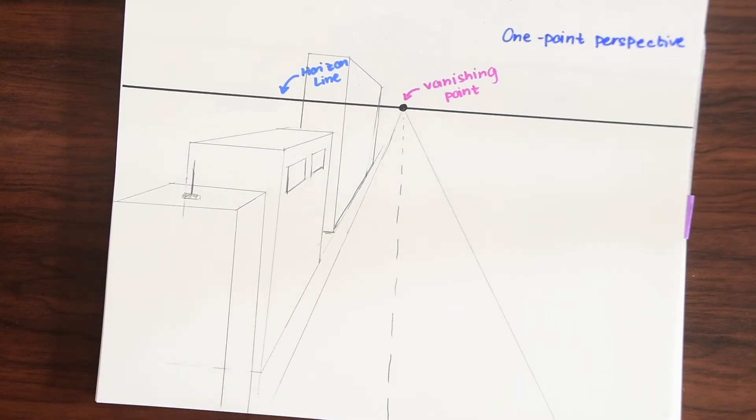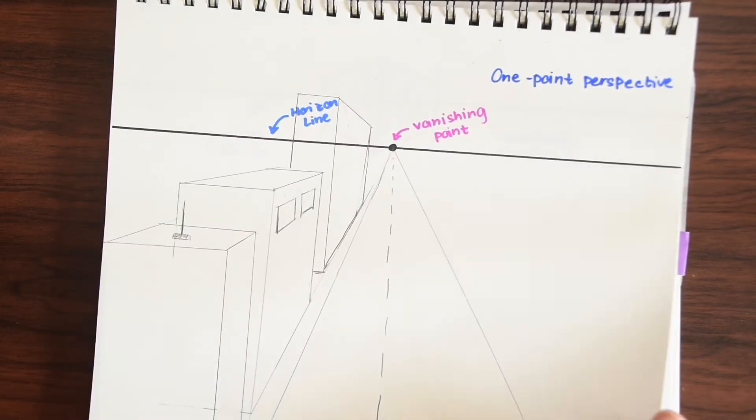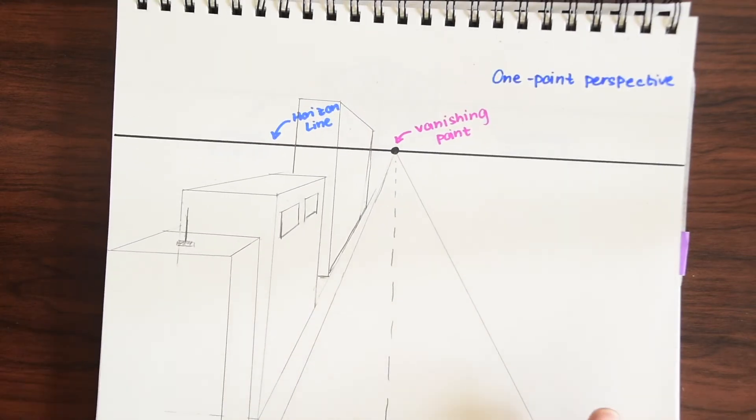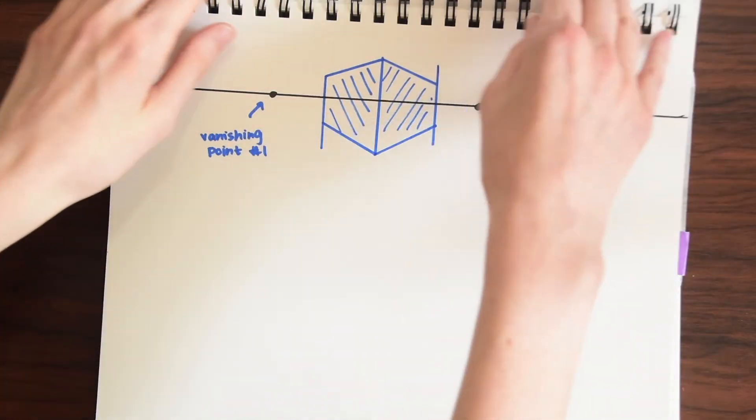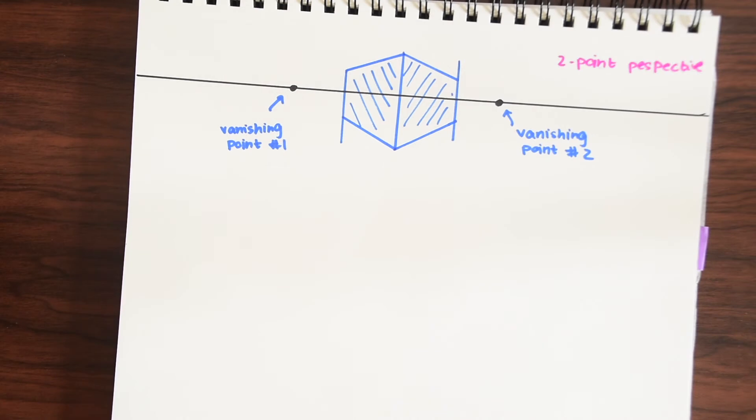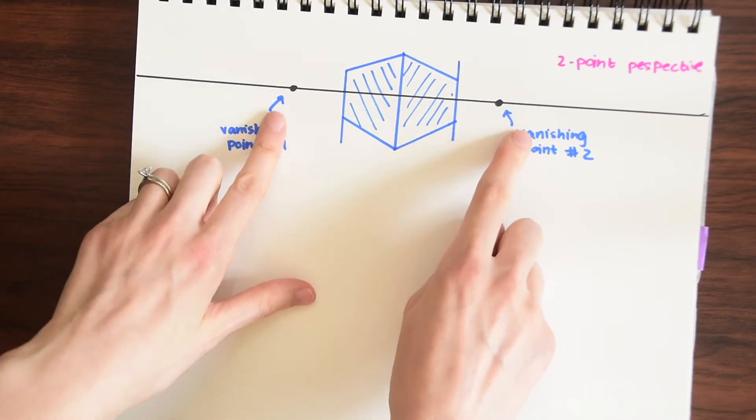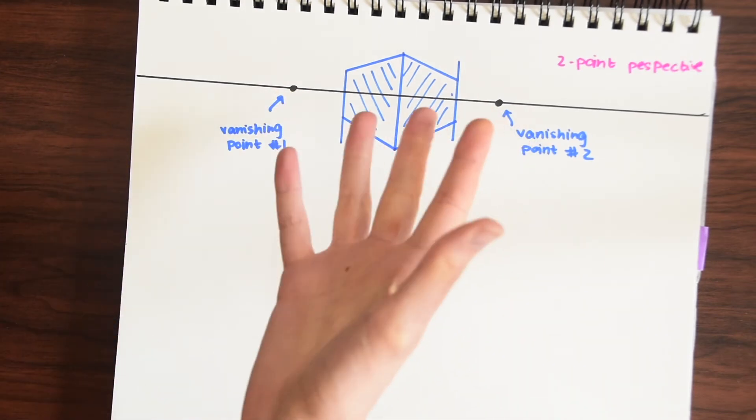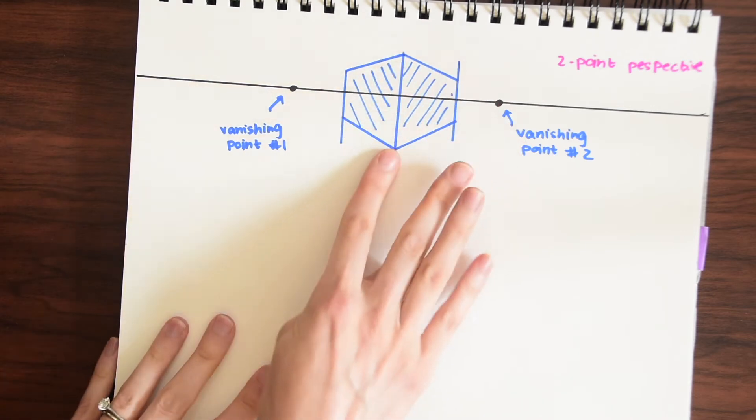So this is one point perspective but in perspective drawing there are also two and three point perspectives. That's where we're really going to see some angles. So we're just going to go over two point perspective today. So two point perspective happens when there's two vanishing points and we want to see a shape on its side by like its corner.